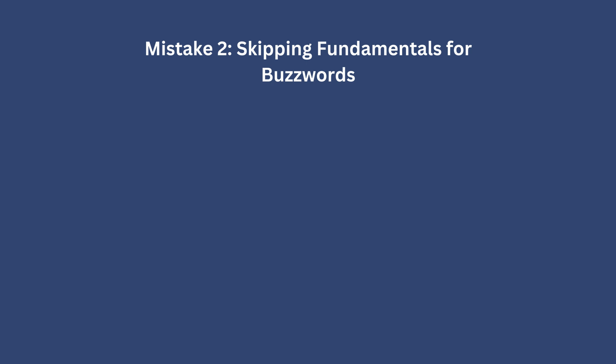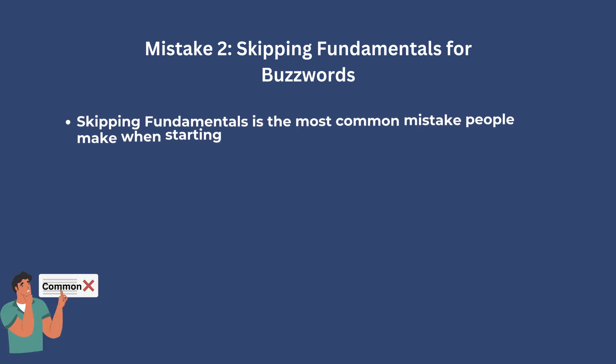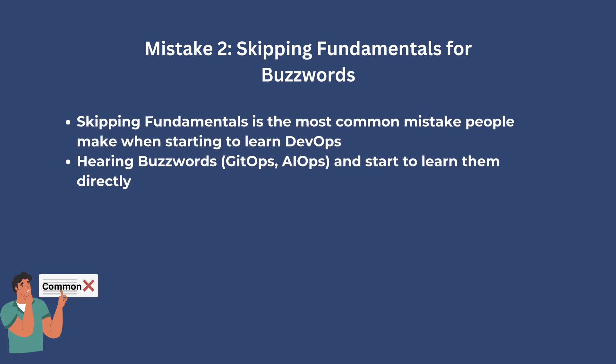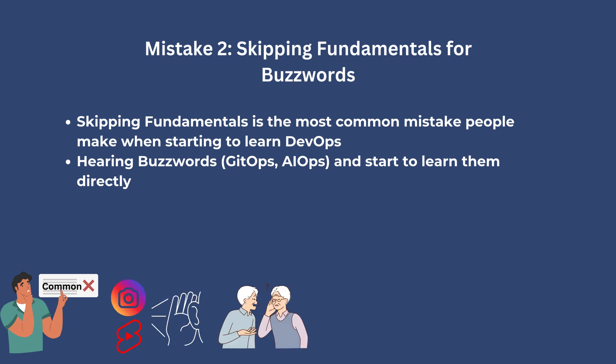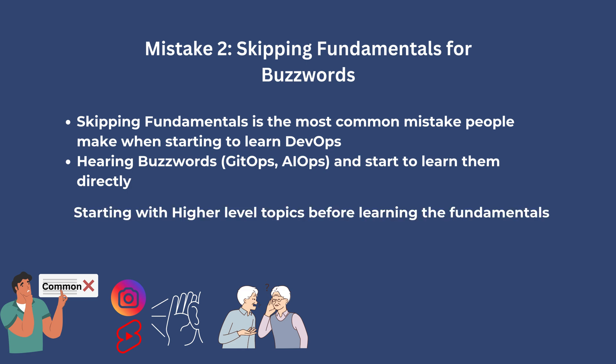Mistake number 2 is skipping the fundamentals. This is the most common mistake people make when learning DevOps. They hear buzzwords like GitOps or AIOps somewhere from social media or through friends, and they just directly dive into learning that.